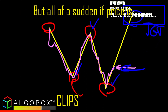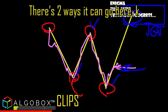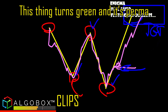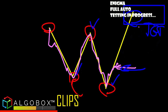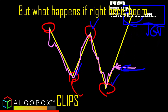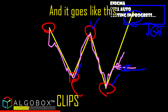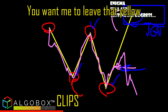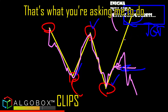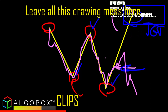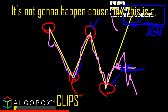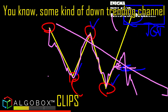That's one way to do this. But all of a sudden if price is coming up, there are two ways it can go. If it goes pop, pop, pop, pop — boom — you're happy, this thing turns green. But what happens if right here it goes like this, starts going like this? You want me to leave that yellow box up there? That drawing is no longer applicable at all — it's not going to happen because now this is some kind of downtrending channel or descending wedge.